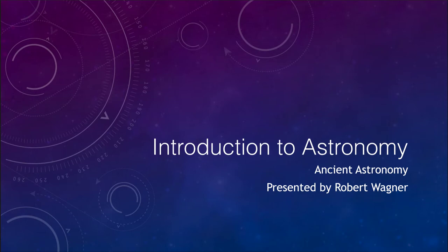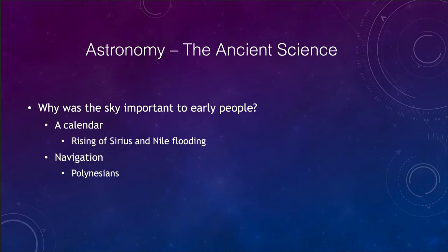First of all, astronomy is really the earliest science and one of the earliest things that was studied. Why was this so important to the early astronomers? A couple of things were important. Astronomy gave us the calendar, a way to keep track of time by following the motions of the sun, planets and stars. That gave us a way to find out when the seasons were coming.